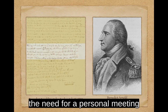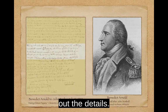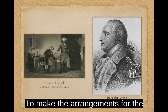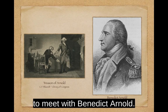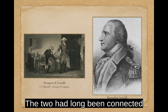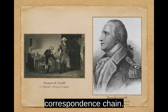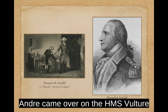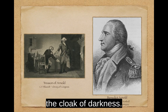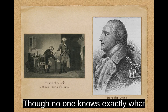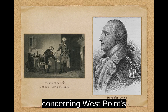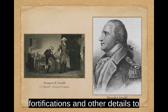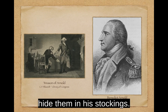Arnold then expressed the need for a personal meeting to work out the details. To make arrangements for the sale and capture of West Point, General Clinton sent John Andre to meet with Benedict Arnold. The two had long been connected through the secret correspondence chain. Andre came over on the HMS Vulture on the Hudson River under the cloak of darkness. Arnold also passed papers concerning West Point's fortifications and other details to Andre, insisting that he hide them in his stockings.